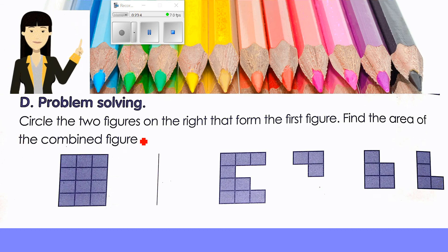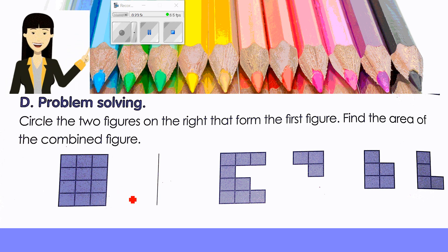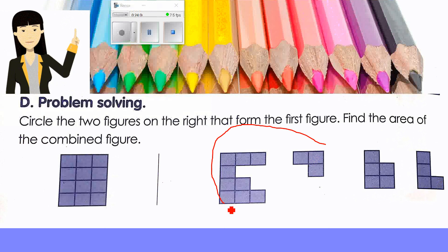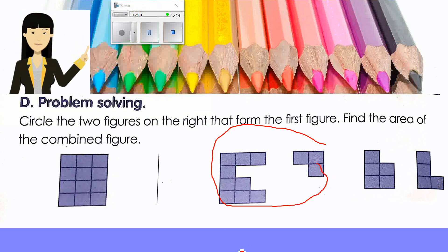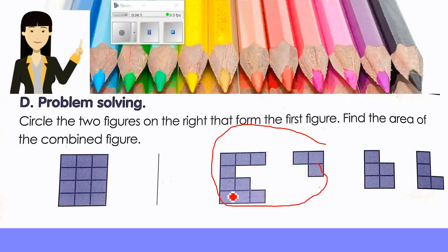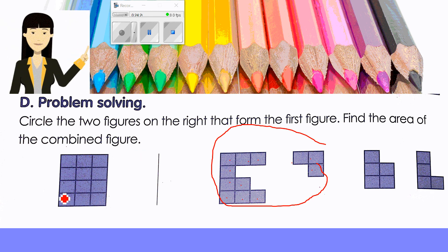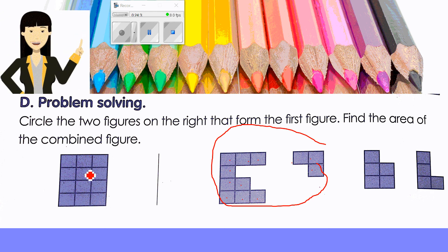Here is a problem solving exercise. Two figures on the right form the first figure — find the area of the combined figure. Putting them together: counting gives twelve. The area is 12 square units. To check the answer, count the squares to confirm the total is the same.